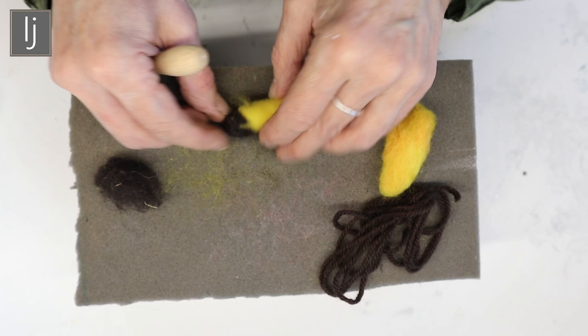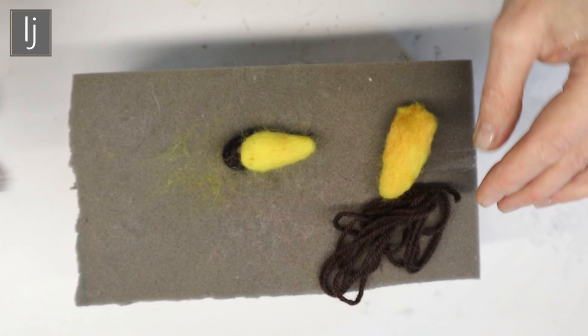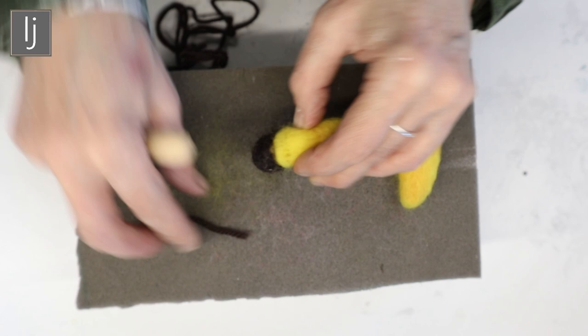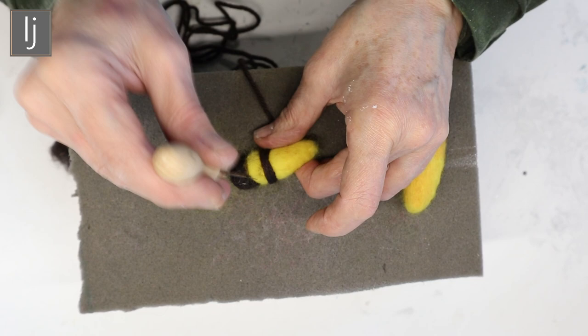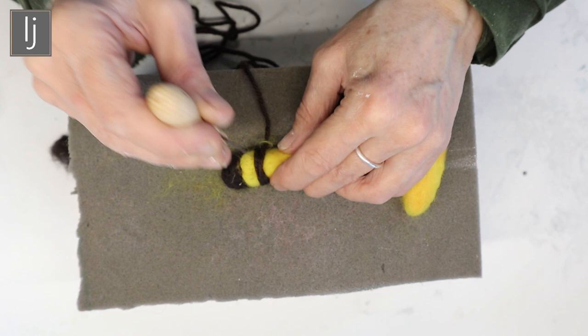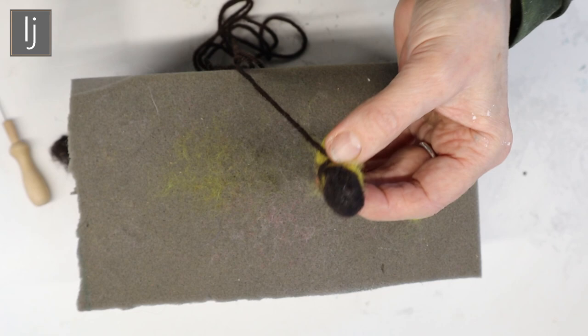See some of the hairs have come through on the yellow. You can just bring stripes around with wool and simply dry felt them in. That's really easy.